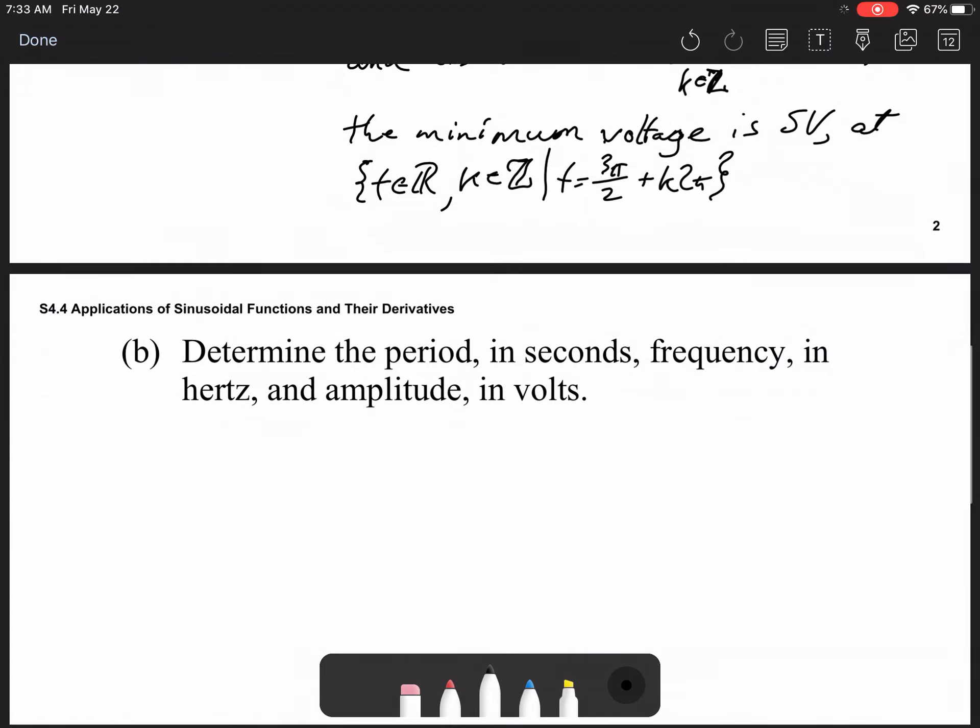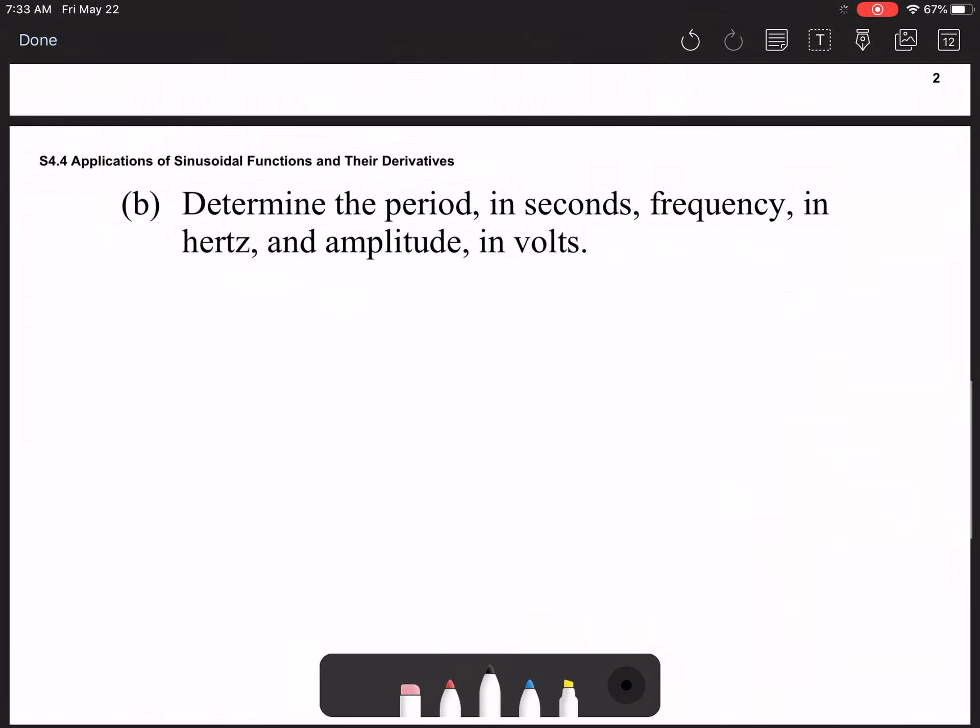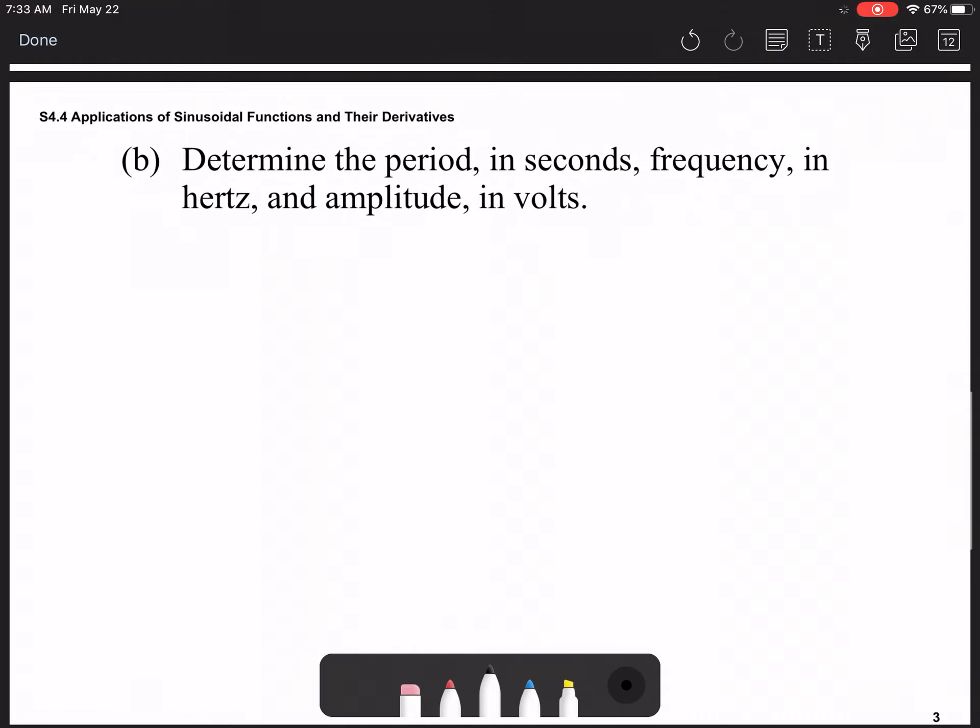Determine the period in seconds, frequency in hertz, and amplitude in volts. This is just some information that I wanted you guys to realize. So, period. Well, due to the fact that we know it repeats every 2π units, this is 2π seconds.